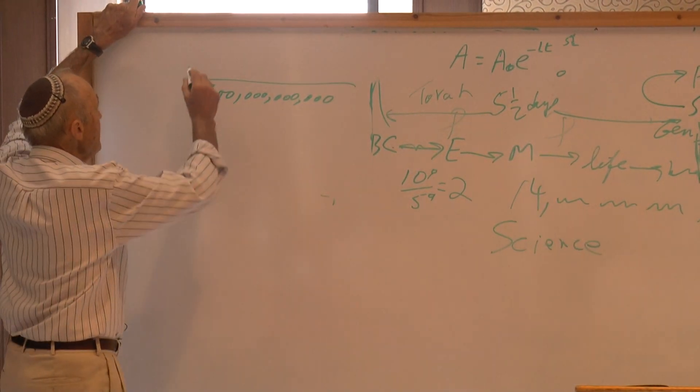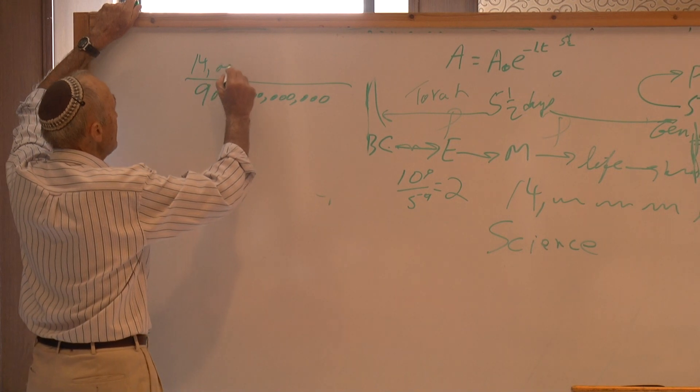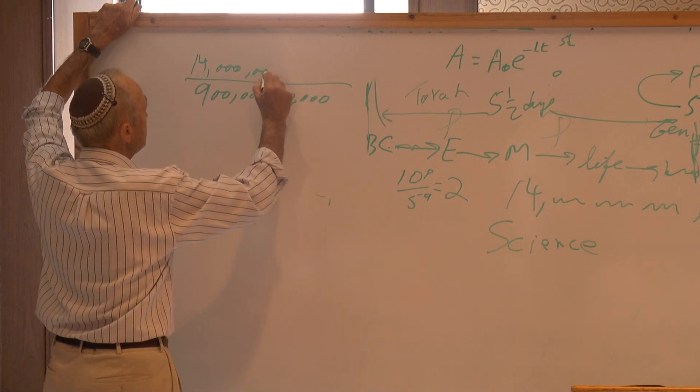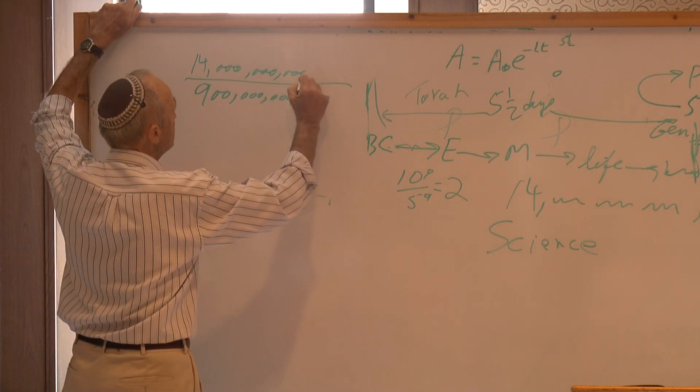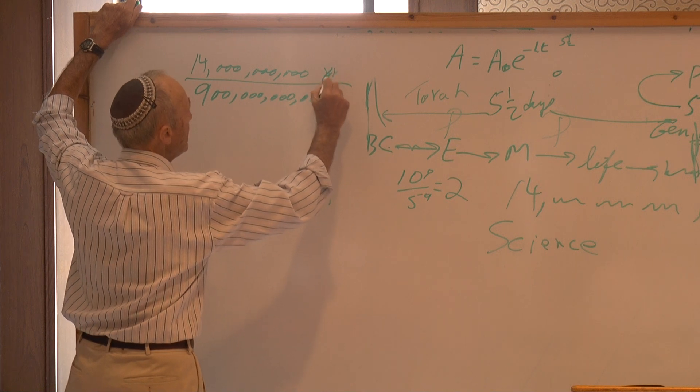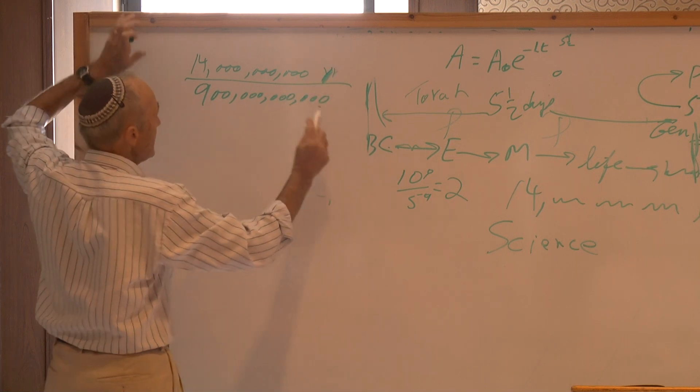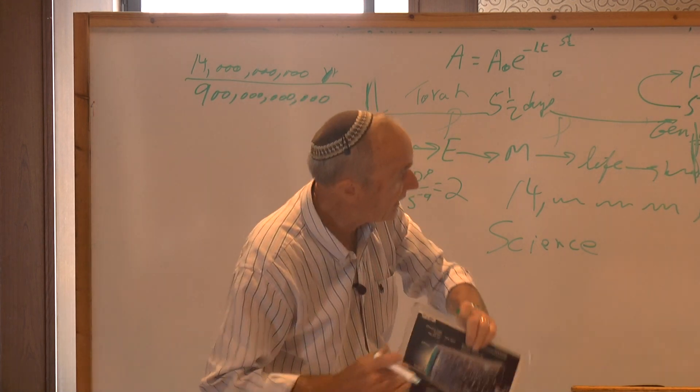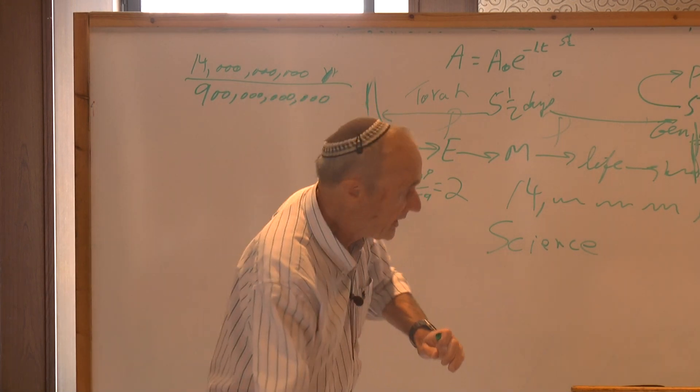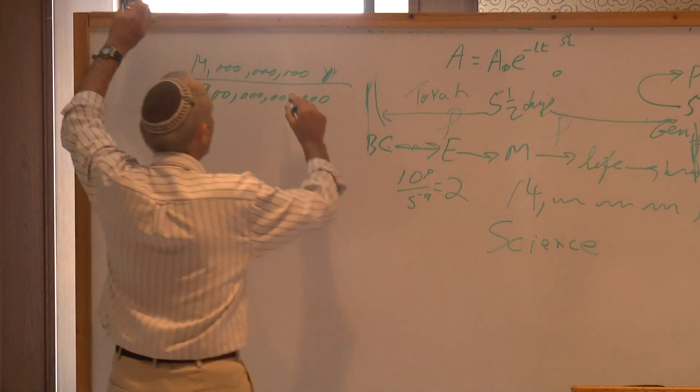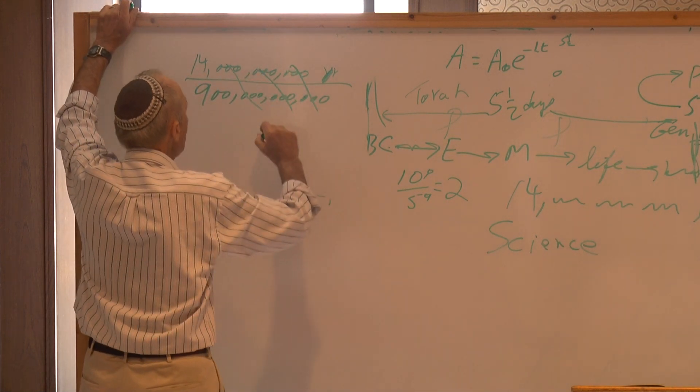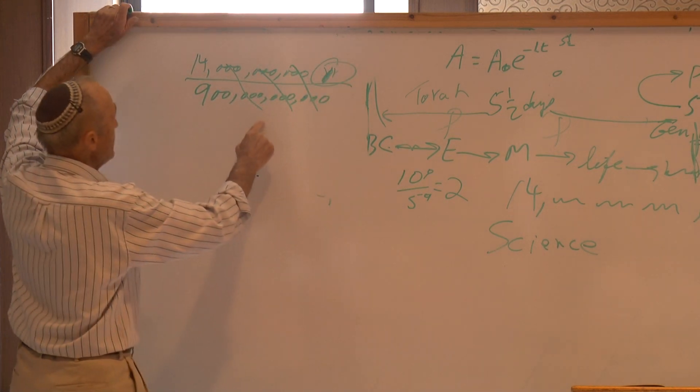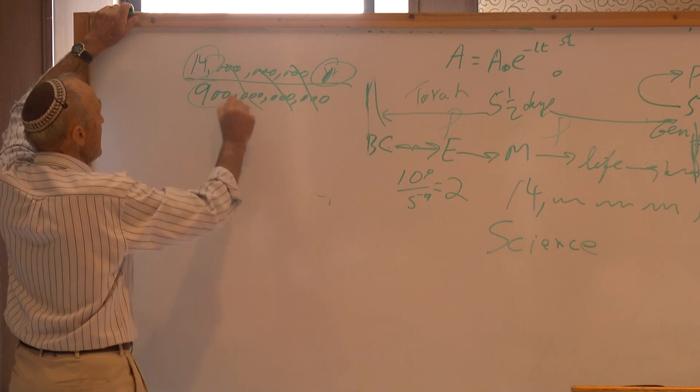What it means is that if I have a 14 billion year old universe and I compress it going back in time by this 900 billion which comes from that equation, then what you get is the billions all drop off. It could have been anything but the billions drop off. But the years remain because there's no units down here. See, you have 14 years divided by 900.